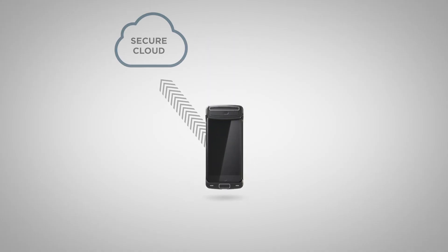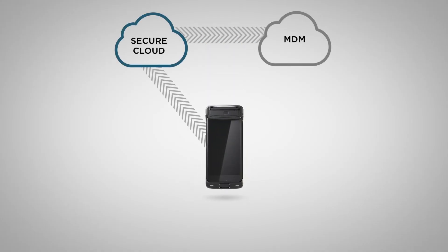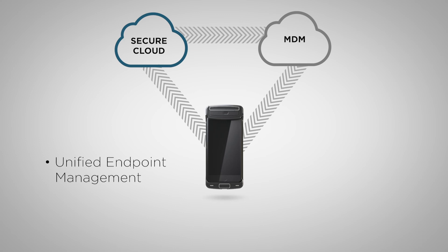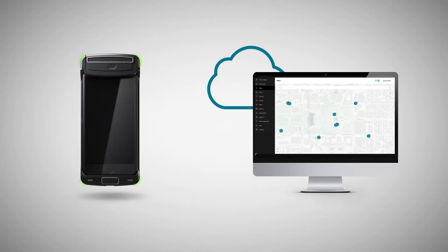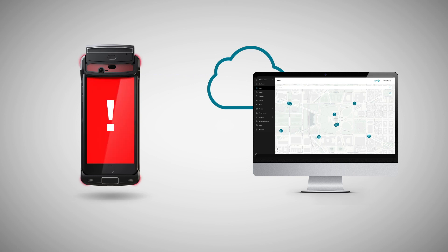By integrating Provoro's policy engine monitoring and reporting with an organization's unified endpoint management and mobile device management solutions, wireless or wireless intrusion detection, administrators can set alerts or take policy enforcement actions directly on the user's mobile device, leveraging their broader infrastructure capabilities.